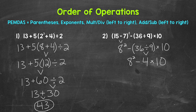Now we have 8 squared minus 4 times 10. Any parentheses? No. Any exponents? Yes, so that's what we need to do next. We have 8 squared, which means 8 times 8. 8 times 8 is 64. Now we can bring down everything we did not use — so minus 4 times 10.